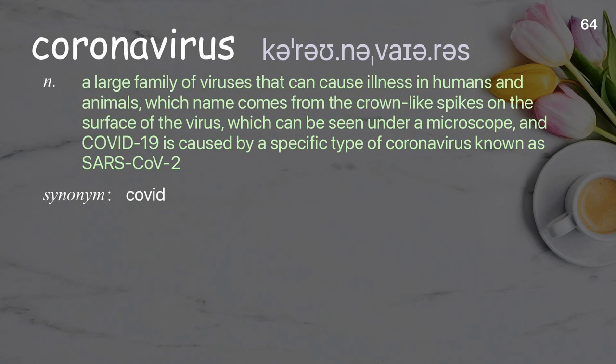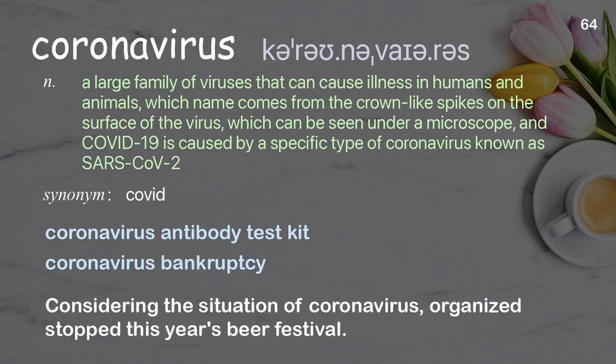Coronavirus: a large family of viruses that can cause illness in humans and animals; the name comes from the crown-like spikes on the surface of the virus. COVID-19 is caused by a specific type of coronavirus known as SARS-CoV-2. Examples: coronavirus antibody test kit. Considering the coronavirus situation, the beer festival was cancelled this year.